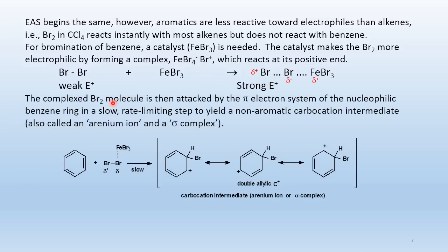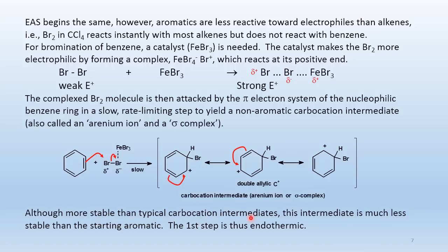This complex bromine molecule is attacked by the pi electron system of the nucleophilic benzene ring in the slow rate-limiting step, yielding a non-aromatic carbocation intermediate. As bromine accepts the pair of electrons, FeBr4⁻ is the leaving group. The carbocation ortho to the halogen is delocalized by resonance to the ortho and para positions. This intermediate, though stabilized by resonance, is much less stable than the aromatic starting material, making this first step endothermic.